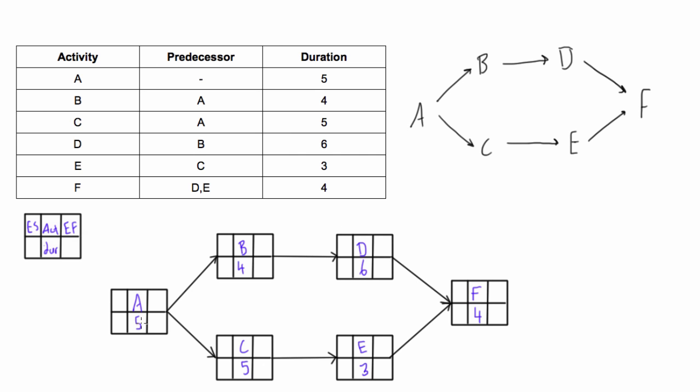A is at the beginning of the project—it has no predecessor, so we begin that at zero. This is the beginning of day one, whereas the number one would be the end of day one. Activity A is five days long, so zero plus five means activity A will end at the end of day five if there's been no delays. Now, to find the early start of succeeding activities...